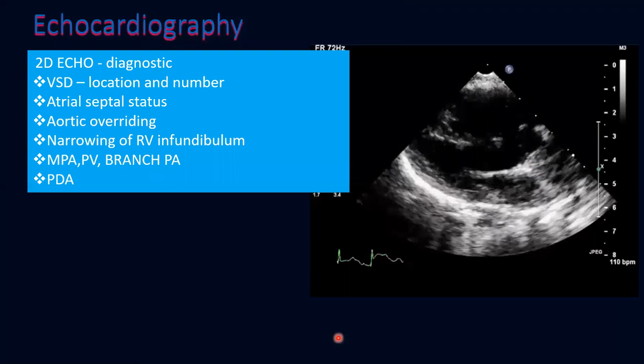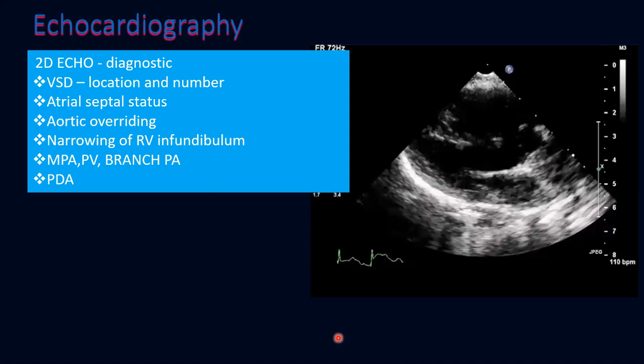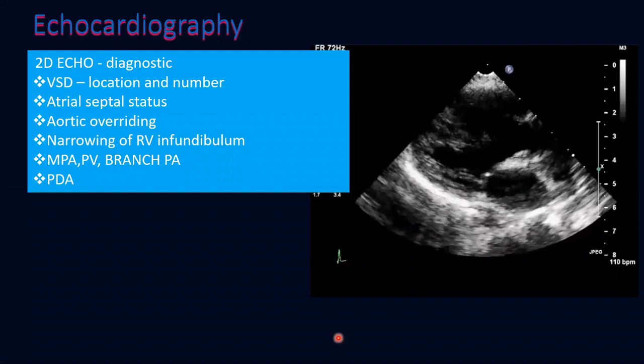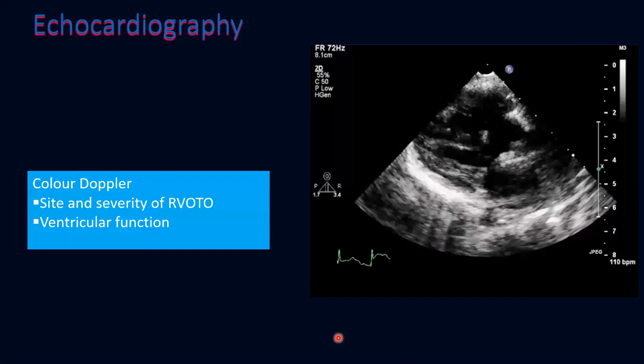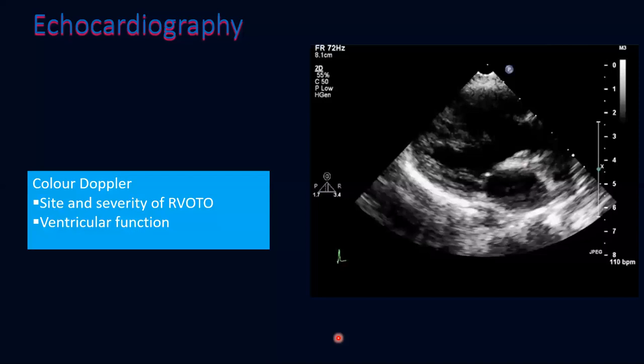2D echocardiography is diagnostic. It helps ascertain the VSD location and number, atrial septal status, aortic overriding, narrowing of RV infundibulum, main pulmonary artery, pulmonary valve, branch PAs, and PDA. Almost any information needed for surgery is available with 2D echocardiography. Color Doppler assesses the site and severity of RVOT obstruction and ventricular function. With these two modalities, you get almost sufficient information to proceed to surgery.